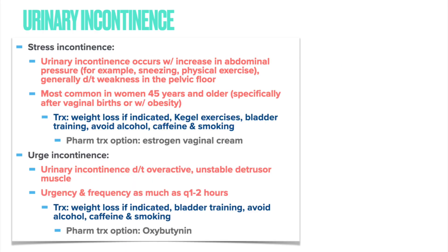Urinary incontinence has two types to focus on. Stress incontinence is urinary leakage with increased abdominal pressure, such as sneezing or exercise, generally due to pelvic floor weakness. It occurs most often in women 45 and older, particularly those who have had vaginal births or have obesity. Treatment includes weight loss if indicated, Kegel exercises, bladder training, and avoiding alcohol, caffeine, and smoking.